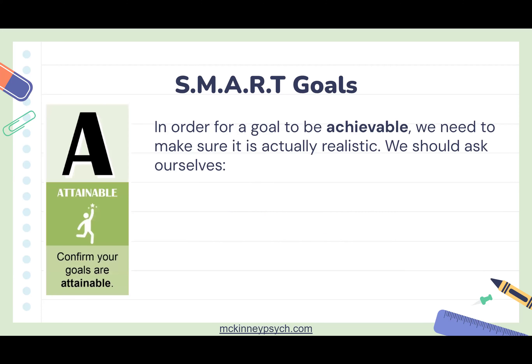For making sure a goal is Attainable, this might involve some self-reflection. We need to honestly ask ourselves what our past track record looks like and how we can make sure our goal reflects a mixture of our current motivation and our past as well as current abilities. You can reach for the stars, but if that's completely unattainable, you're going to be frustrated and disappointed.